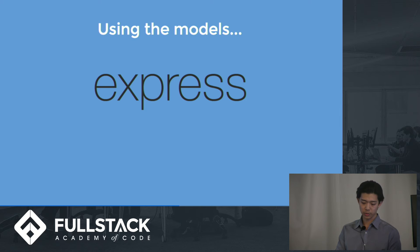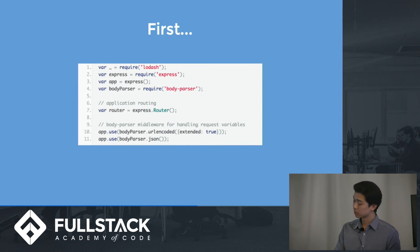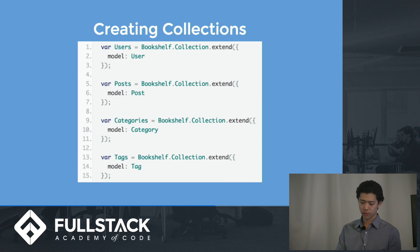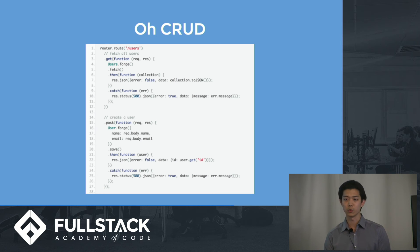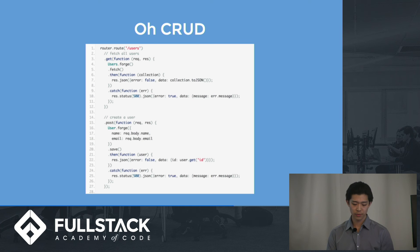After creating the models, it's time to use them with Express. I'll show you some example routes. First, we have to require some familiar libraries and also define body-parser to handle request variables. In order to perform an operation on multiple users at the same time, you need to create a collection. To start with our API routes, we'll create user routes that require a user ID. On line four, we can see the forge method, which is a simple helper function that instantiates a new model without needing the new keyword. The fetch method below fetches a model from the database and returns a promise. On line 20, save returns a promise as well, resulting in saving the data model. Notice that user.get on line 22 — the .get method gets the current value of an attribute from the model.